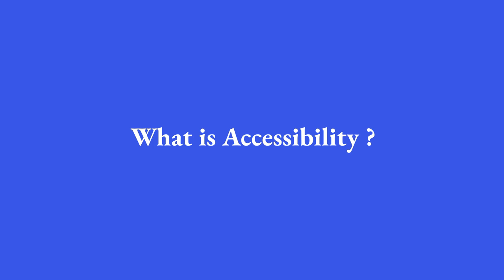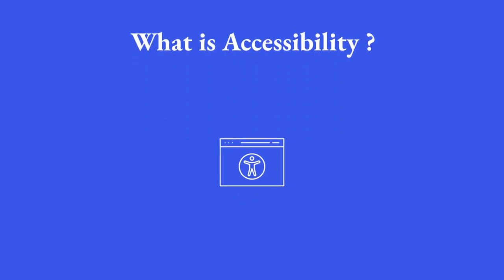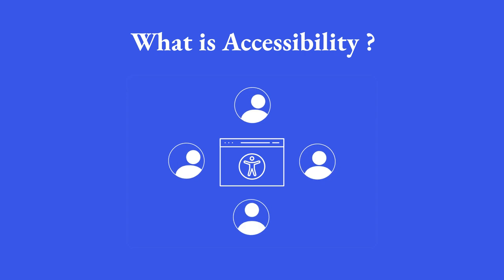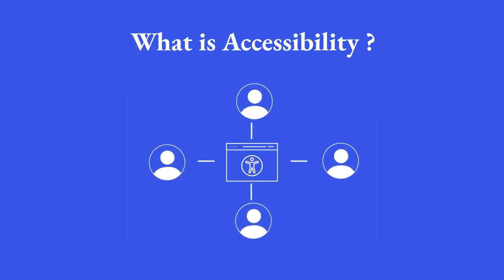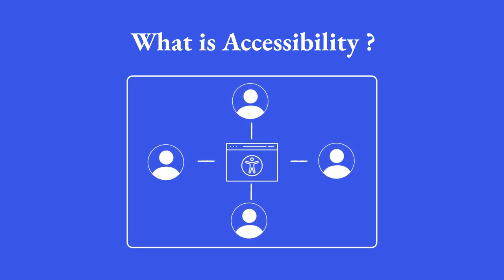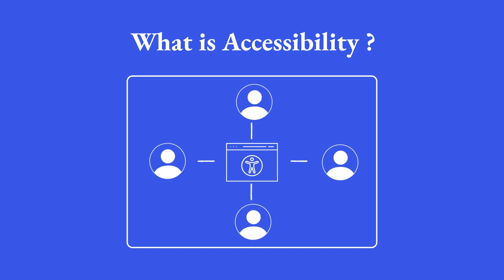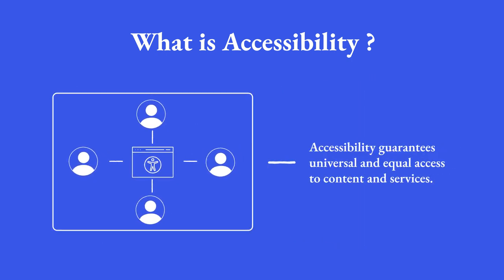What is accessibility? As a subset of digital accessibility, web accessibility means building sites that all people, regardless of their abilities, can use. In the most general, straightforward sense, accessibility guarantees universal and equal access to content and services. As you learn or practice accessibility, you'll encounter technical terms.